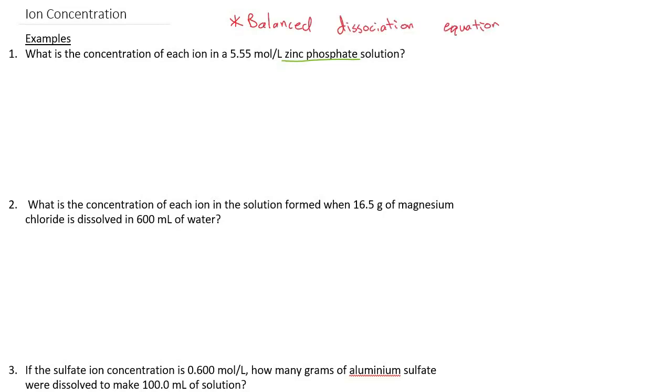So that will be our first step to solving ion concentrations. What I mean by a balanced dissociation equation is just taking our zinc phosphate and looking at what ions would be produced as that dissolves and dissociates in water. When we take zinc phosphate, which is in solid form, and dissolve it in water, it turns into zinc 2+ ions and phosphate 3- ions. We have to make sure this is balanced by the 3 and the 2 as our coefficients here.